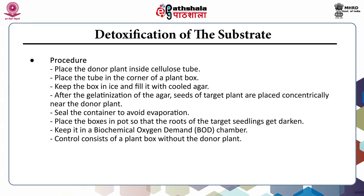The procedure of the plant box method: firstly, the donor plant is placed inside a cellulose tube, which is then kept in the corner of a plant box filled with cooled agar. After gelatinization of the agar, seeds of the target plant are placed concentrically near the donor plant. The container is sealed to avoid evaporation. The boxes are placed in pots so that roots of target seedlings get darkened, then kept in a biological oxygen demand chamber. The control consists of a plant box without the donor plant.